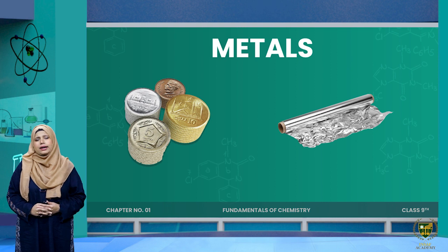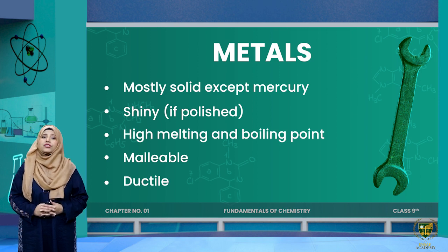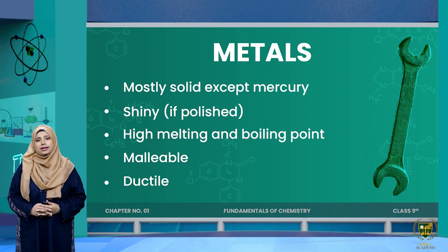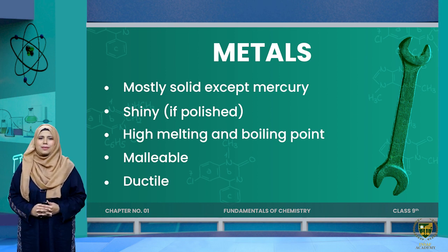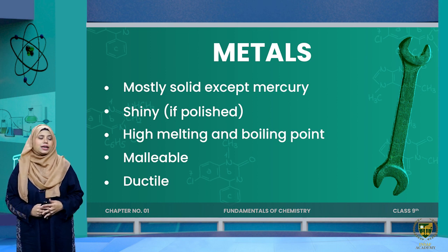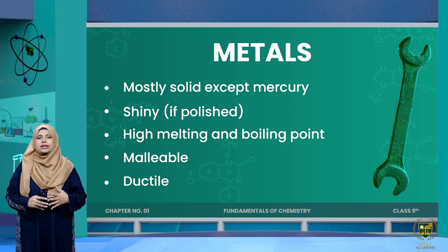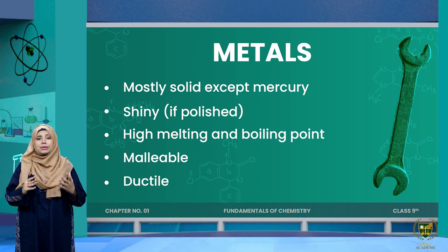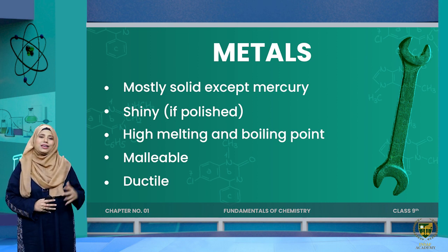Besides shininess, metals have high boiling and melting points, meaning it is quite difficult to melt them. You can estimate this from the fact that your cooking utensils are mostly made of metal — we use them for cooking for a long time and they still don't melt. Another property of metals is that they are malleable: we can hammer them into sheets and bend them into any shape we want.